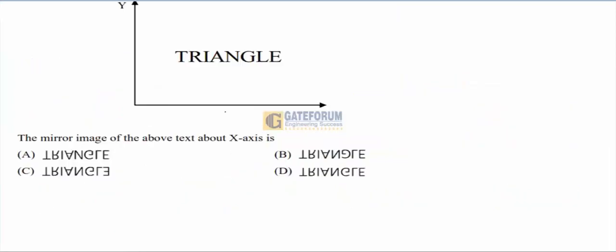The mirror image of the text about the x-axis: L would look like this, G would look somewhat like this, N would look like this, A would look like this, I would look the same, R would look like this, and T would look like this. Checking the options, the last one goes exactly with it.